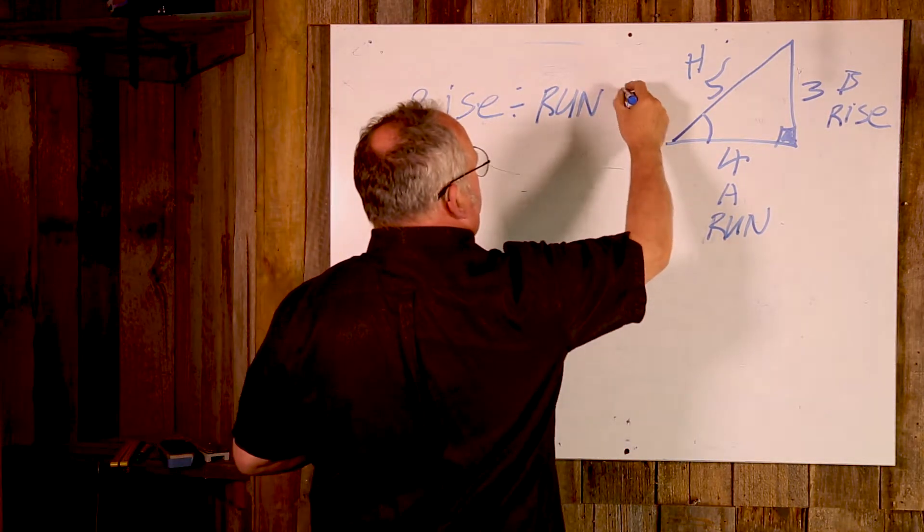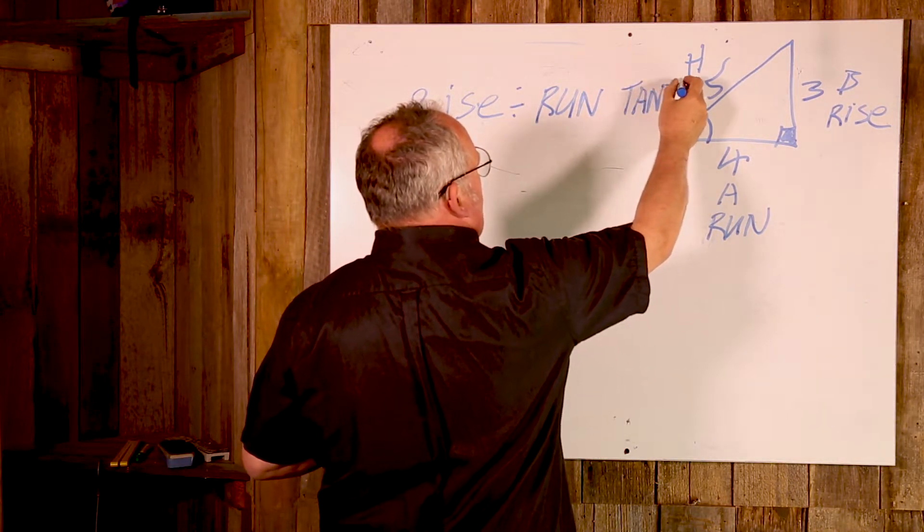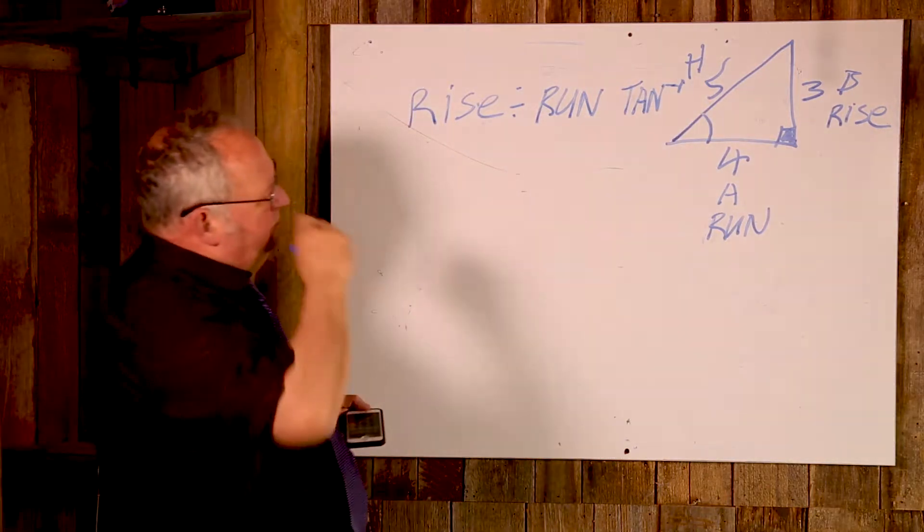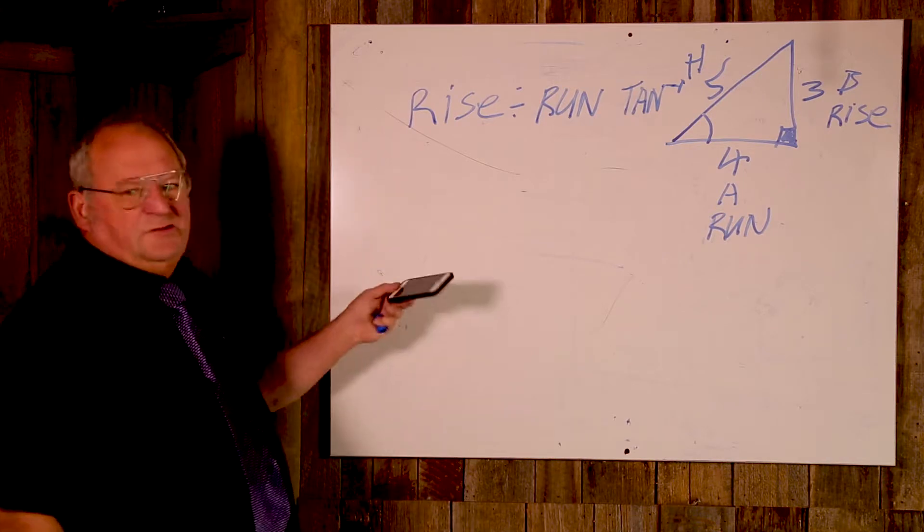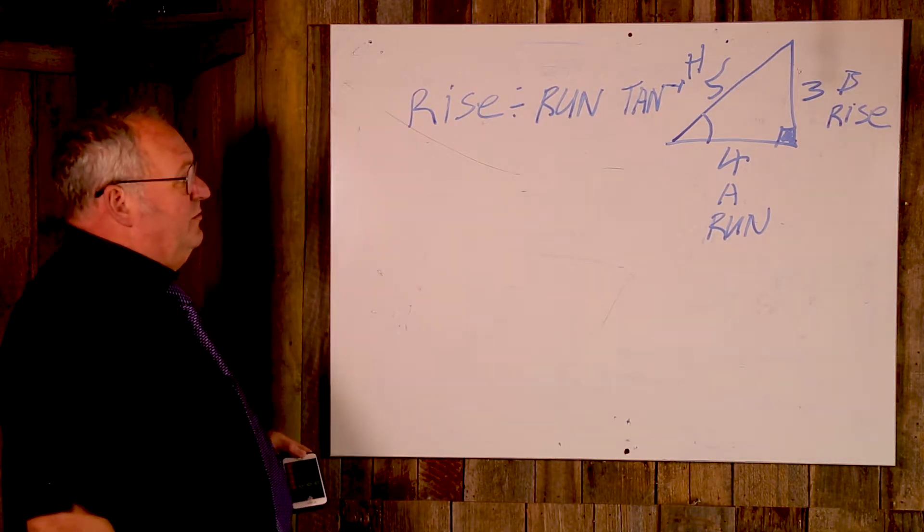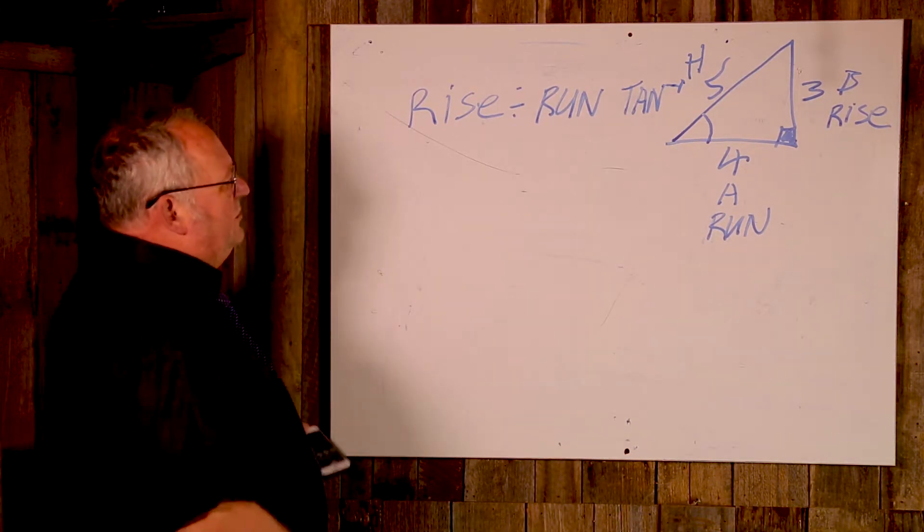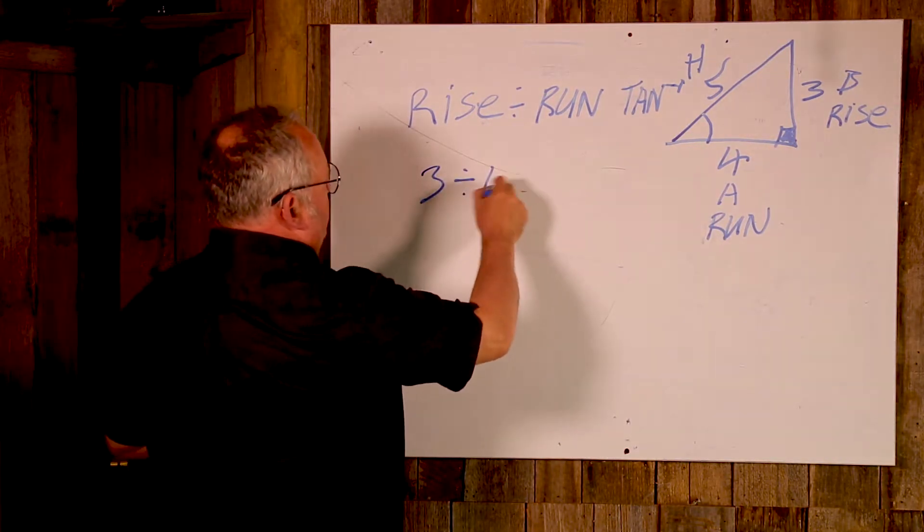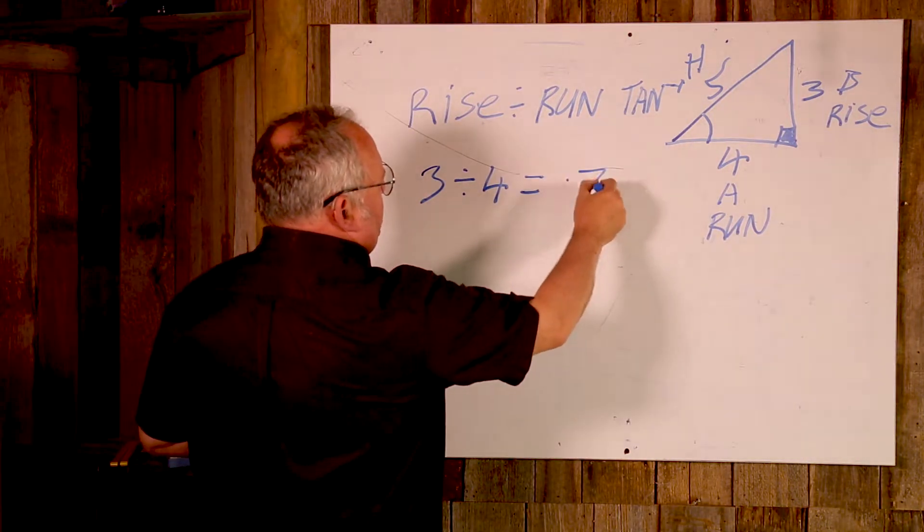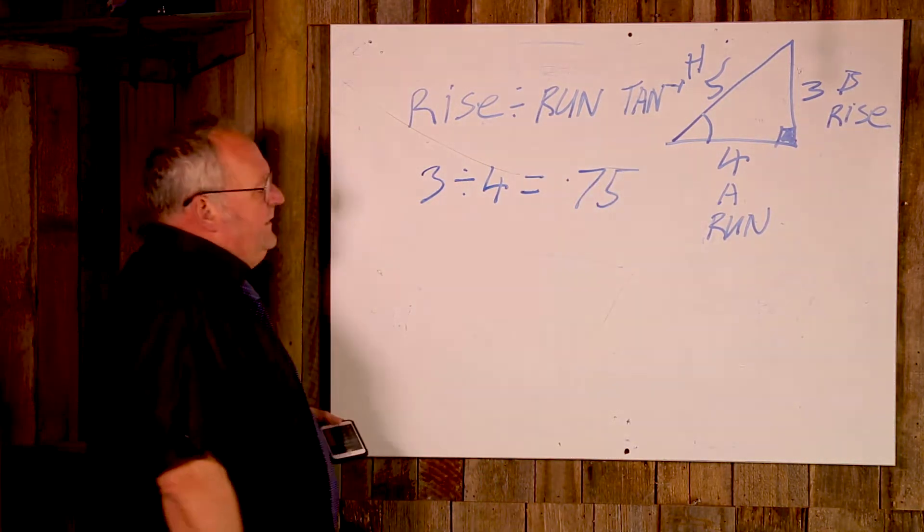Then tan, or inverse tan, or tan with a minus one. So let's break it down. I do it with the iPhone because I find it really convenient. So we go 3 divided by 4 equals 0.75 and that pops up.